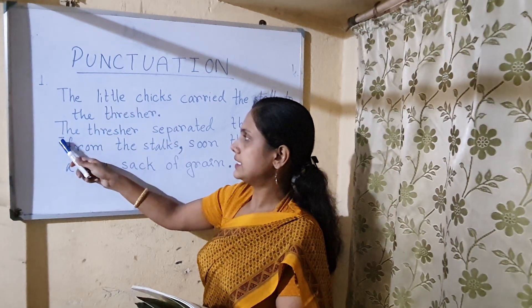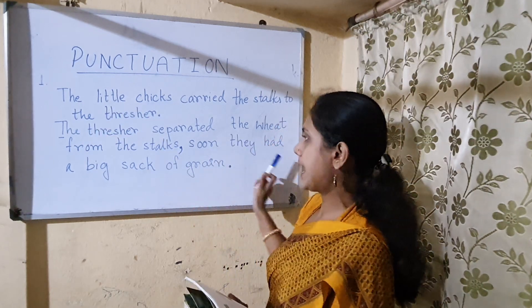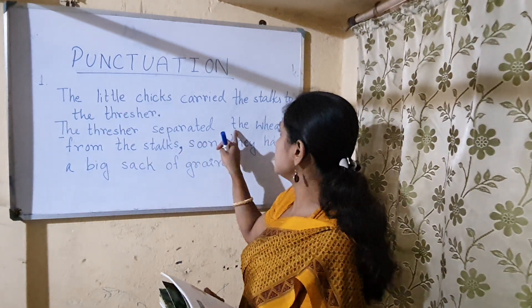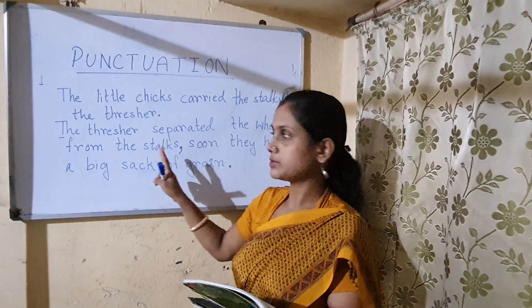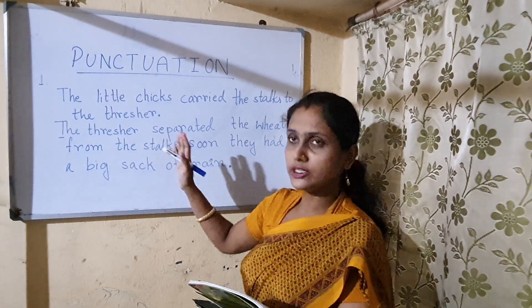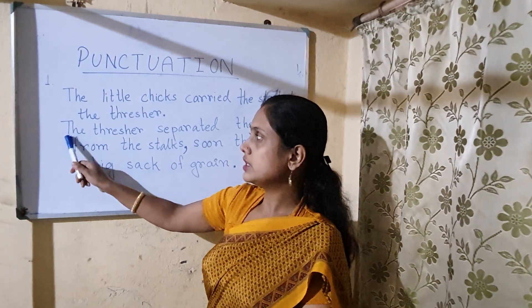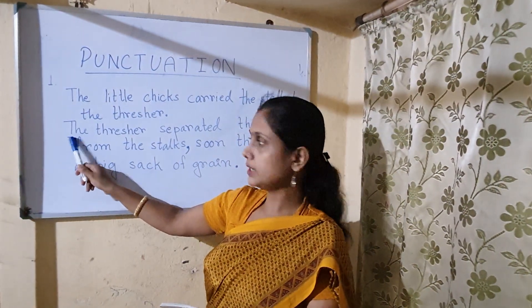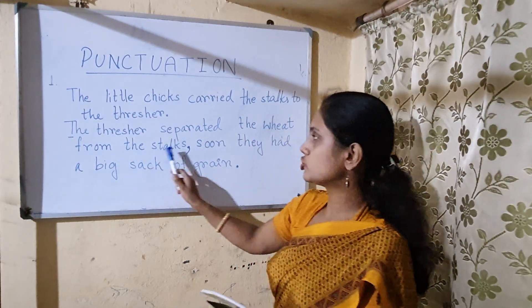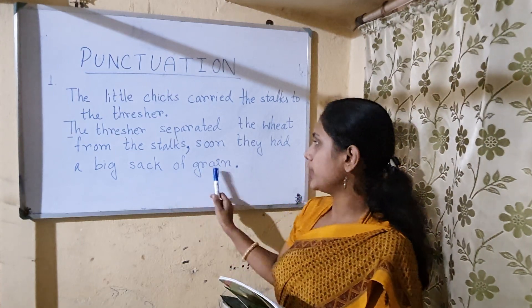Second sentence: 'The thresher separated the wheat from the stalks. Soon, they had a big sack of grain.' Here two concepts are there. 'The thresher separated the wheat from the stalks' is one concept. 'Soon, they had a big sack of grain' — they have got a sack of grain — that is another. But they are joined together and there is no comma given. So what we will do: we will write capital T, which is started with small T. Then after 'stalks,' the thresher separated the wheat from the stalks — after stalks, you put a comma. 'Soon, they had a big sack of grain.' Then full stop.